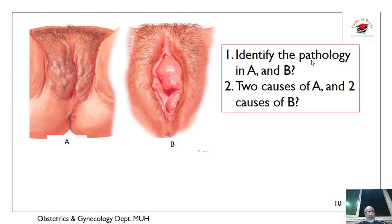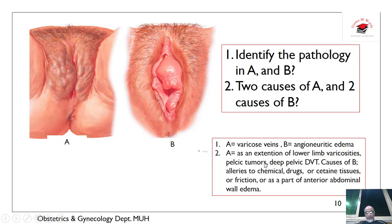What about image A here? These are dilated veins — this is vulvar varicosities. And this is a tumor of the labia minora. The causes of vulvar varicosities are extension — possibly extension of the lower limb varicosity — or pelvic tumors and deep pelvic pathology.